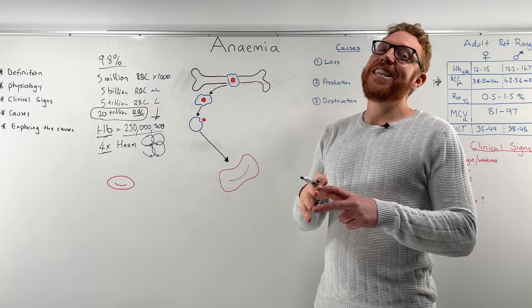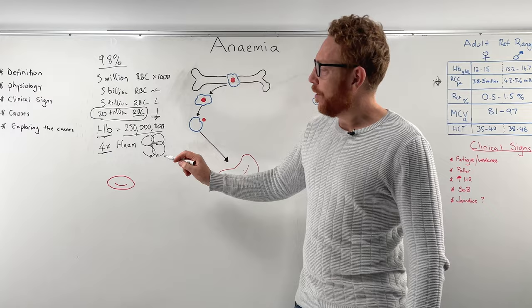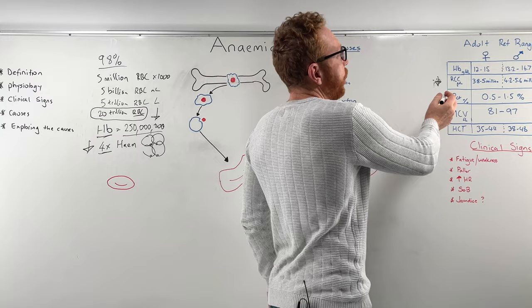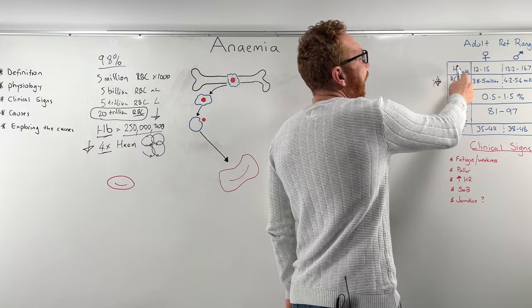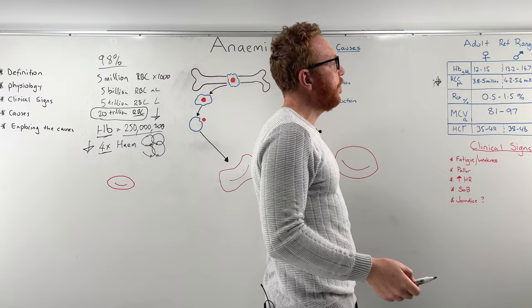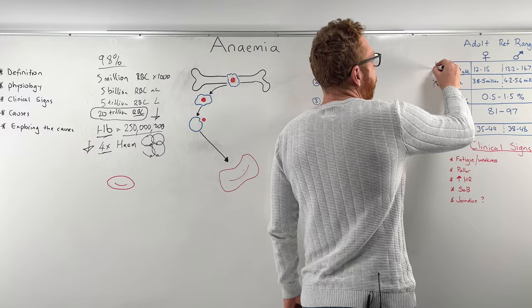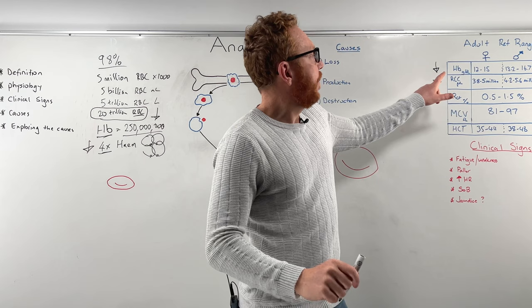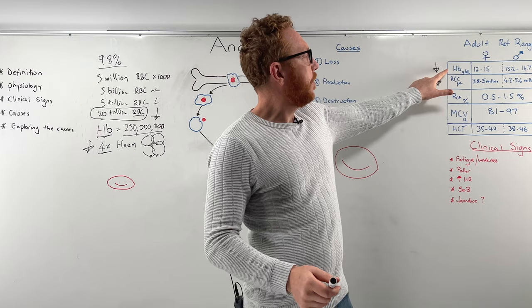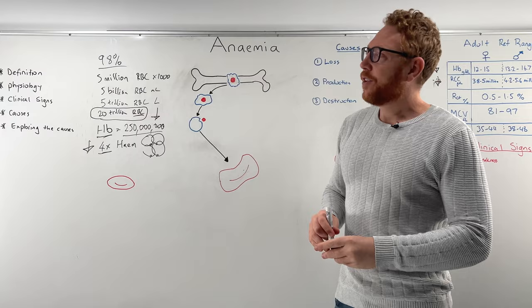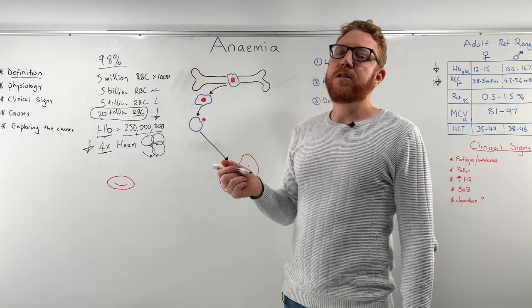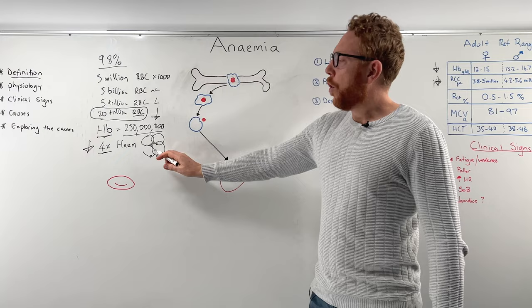That tells you there's a huge oxygen-carrying capability in your red blood cells. If we have a reduction in hemoglobin — approximately 12 to 15 grams per 100 mils for females, or 13.2 to 16.7 grams per 100 mils for males — that would also cause anemia. So you may have normal red blood cell counts, but if the amount of hemoglobin per red blood cell is less, that also results in anemia. The definition of anemia is truly the reduction in oxygen-carrying capabilities, whether from a drop in red blood cells or a reduction in hemoglobin per red blood cell.